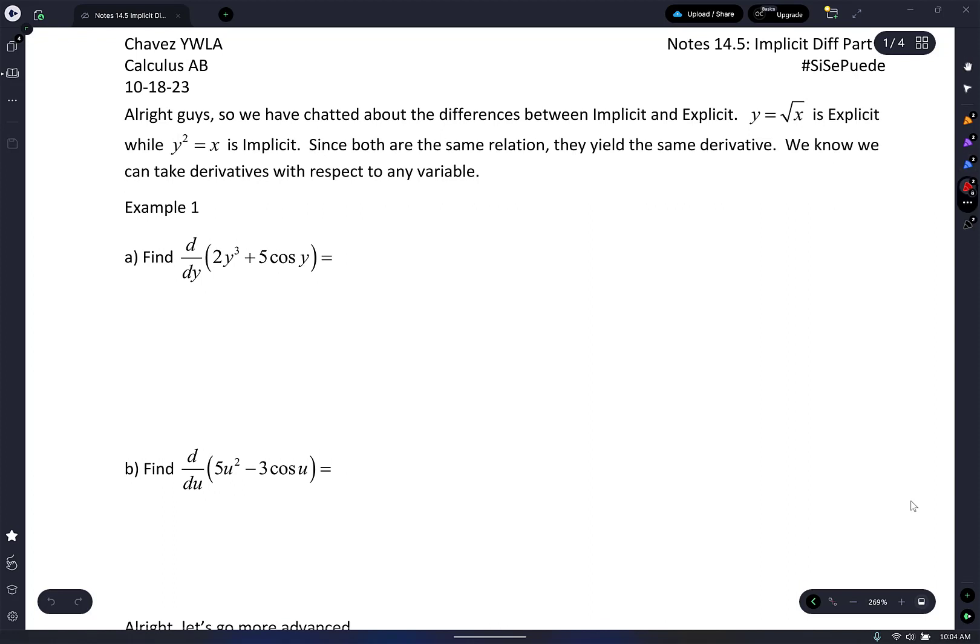So this part right here, you guys already know. You're pretty good at this. We're taking the derivative with respect to y. The bottom letter is what you're taking the derivative with. So the derivative of 2y³ with respect to y is 6y².